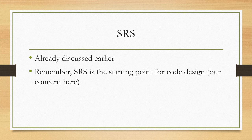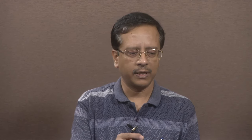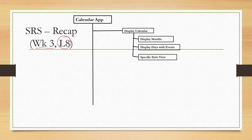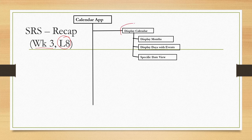As we discussed in the previous lecture, the starting point of our system design activity is the SRS document. From the SRS document, we start designing our system. Let us have a quick look at the SRS that we have discussed for the calendar app in an earlier lecture, particularly lecture number 8 which we covered in week 3. Whenever we are trying to represent an SRS, the first thing is it should be hierarchical for improved manageability. So we have created such a hierarchy.